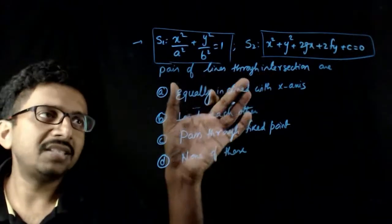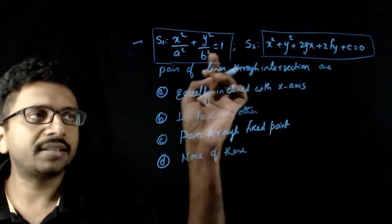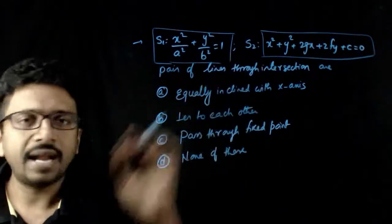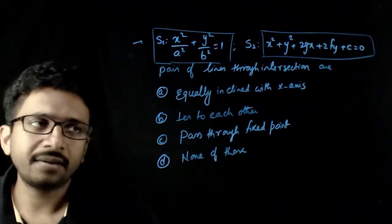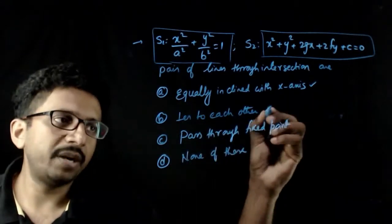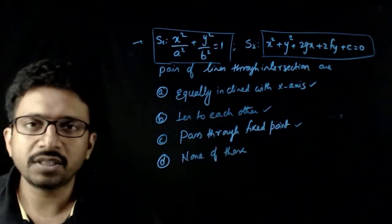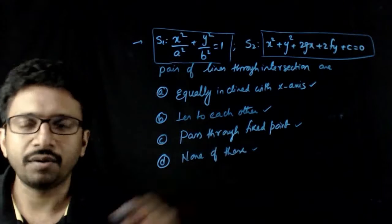Now, the question asked is the pair of lines through the intersection of the ellipse and the circle are first equally inclined with x axis, perpendicular to each other, they all always pass through a fixed point, and none of this.